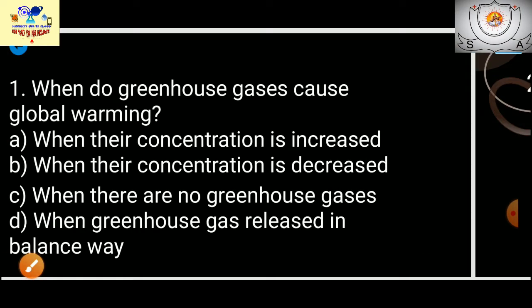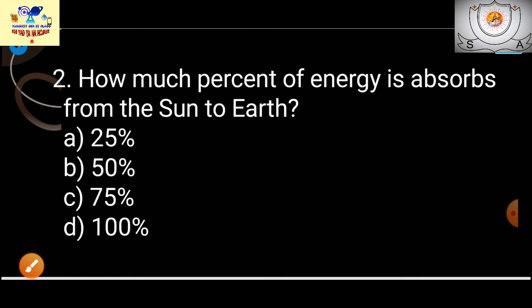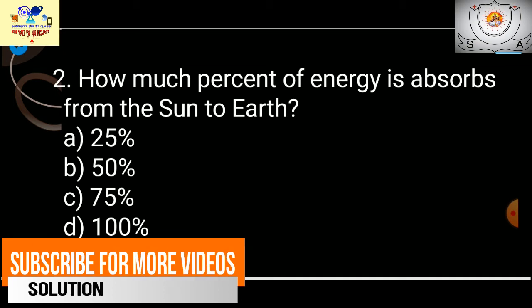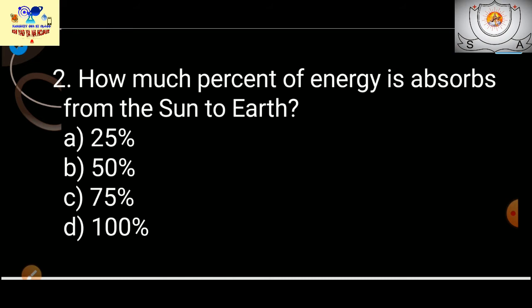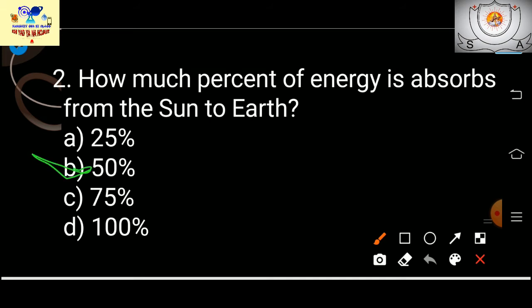Question 2: How much percentage of energy is absorbed from the sun to earth? If you want to learn what percentage is absorbed where, I've made a video on greenhouse gases and global warming — the link will appear at the end. The answer is 50% — the earth absorbs 50%.